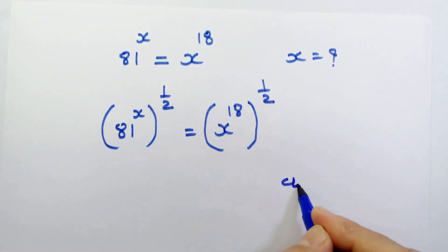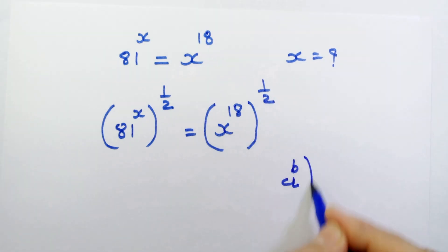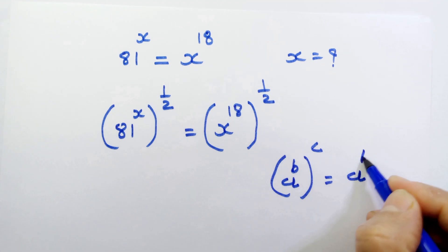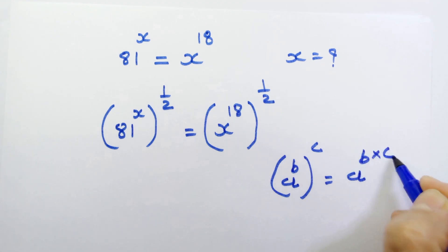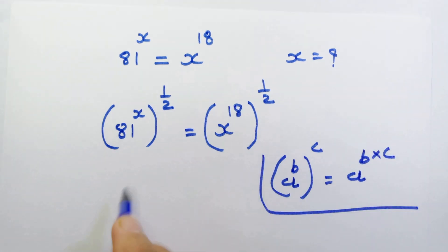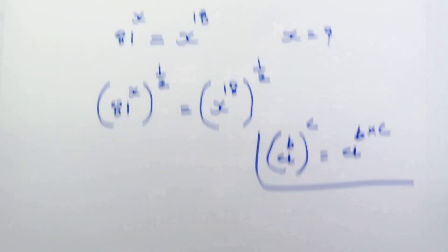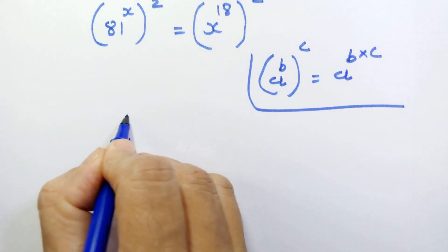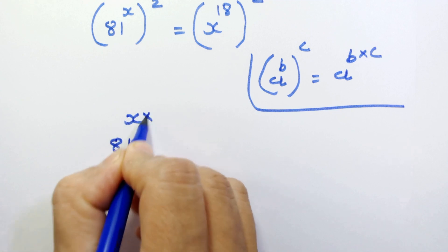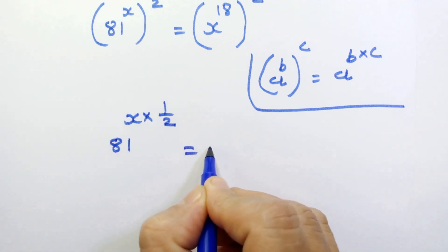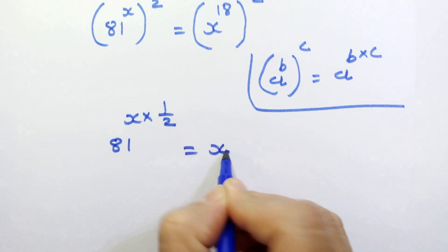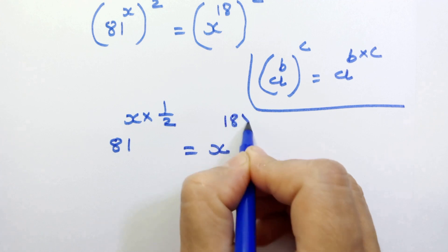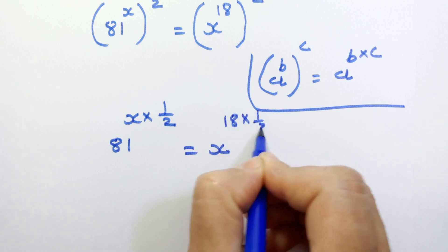Now if we have a raised to b, whole raised to c, then we can write it as a raised to b into c. In this manner, here we can write 81 raised to x into 1 upon 2, is equal to x raised to 18 into 1 upon 2.